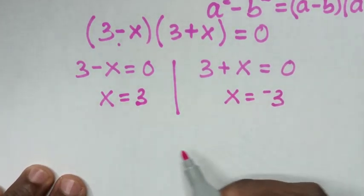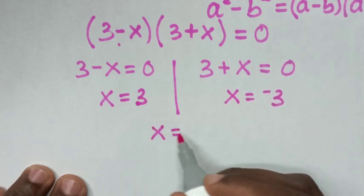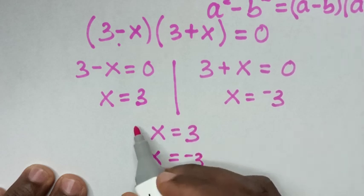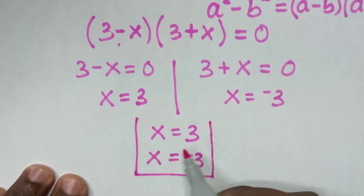Therefore, we have two values of x, where the first value is x equals 3, and the second value is x equals negative 3. These are the final answers for this problem.